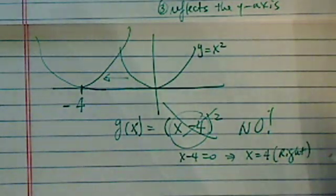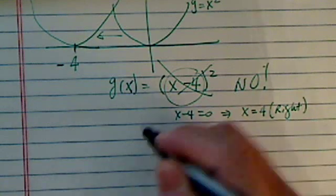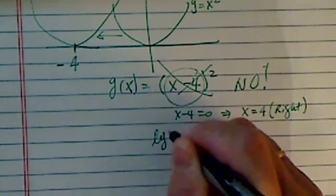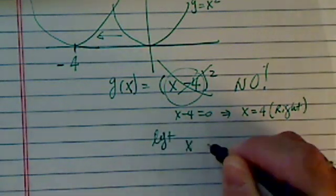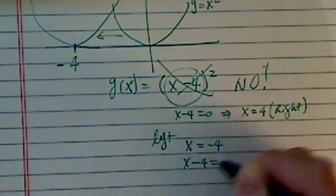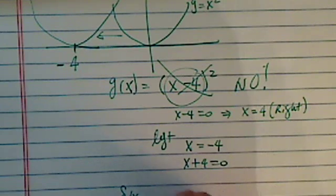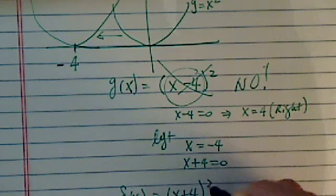So this one is flipped around, but there's no need to memorize it. If it's shifting to -4 left, you just want x = -4, which means x + 4 = 0. So the g(x), when you shift, is actually equal to (x + 4)².